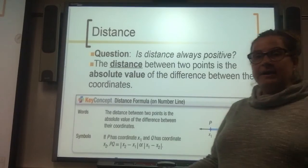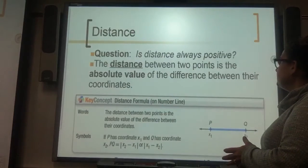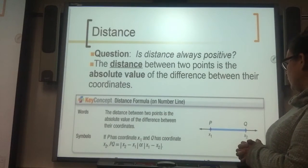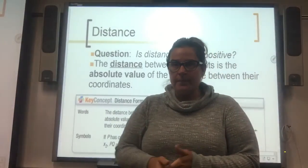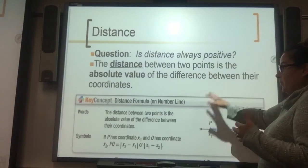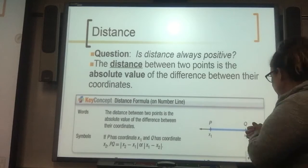So, is distance always positive? The answer is yes. The distance between two points is the absolute value of the difference between their coordinates. If you're talking a straight line like a horizontal or vertical, this is what you're going to do. You're going to find the distance, just count up or however you choose to do it. Always going to be positive.